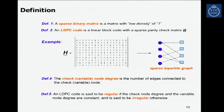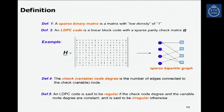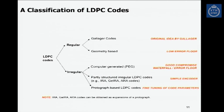The number of variable nodes on the left equals the number of columns of h, and the number of check nodes on the right equals the number of rows of h, since each check node represents an equation — a row of h. We have definitions for check node degree and variable node degree. The check node degree is the number of edges connecting to a check node. An LDPC code is called regular if both the check node degree and variable node degree are constant; otherwise it is irregular.